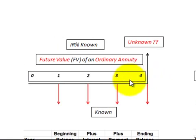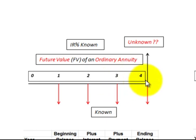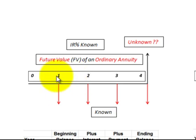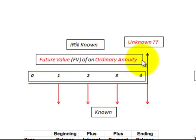Let's start with the ordinary annuity, where we get the payments at the end of each period. We need to know our time frame, in this case end-of-year amounts with a yearly interest rate, and the unknown amount would be the future value. The payments are known, the interest rate is known, the time frame is known, and then we can calculate the future value.